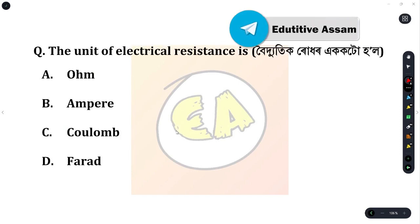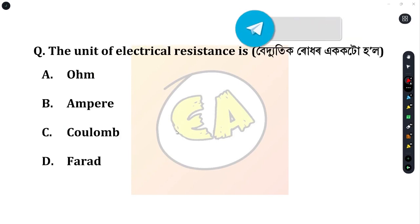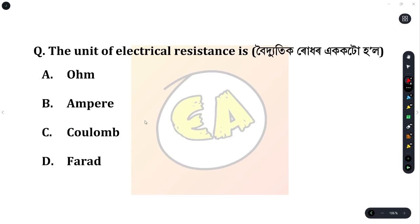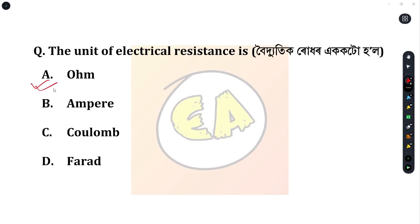Next question: the unit of electrical resistance is? Option A: ohm. Option B: ampere. Option C: coulomb. Option D: farad. The correct answer is ohm — ohm is the unit of electrical resistance.